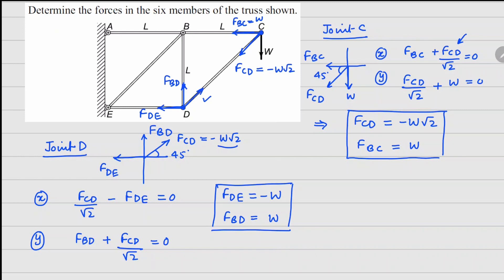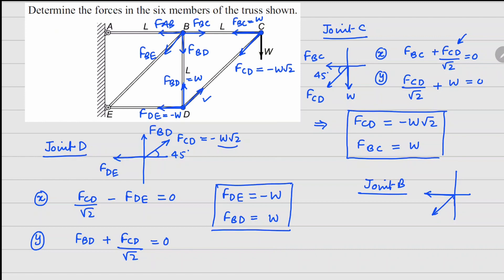So fbd equals w and fde equals minus w. The next joint to analyze is joint B. For joint B we have fab pointing this way, fbe this way, fbd here, and fbc there. The free body diagram shows all four of these forces.